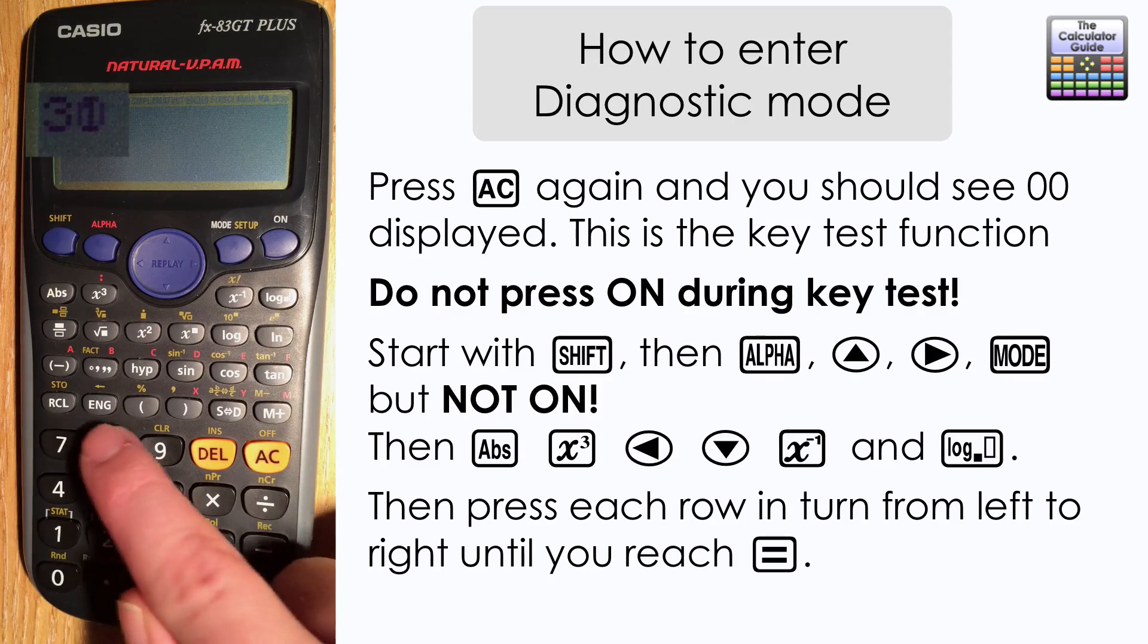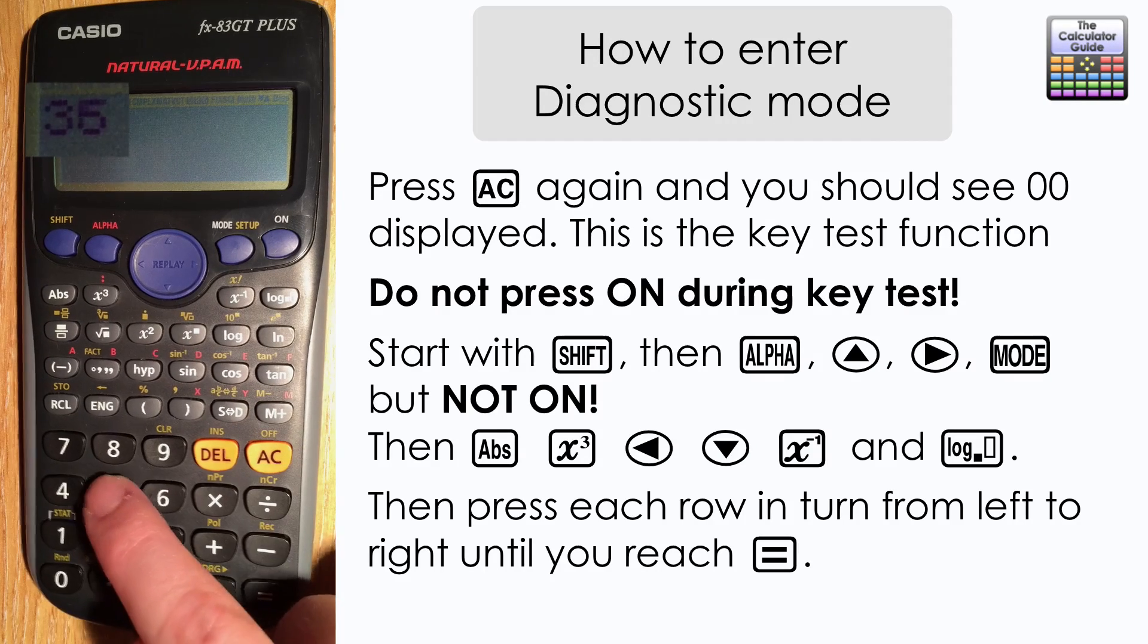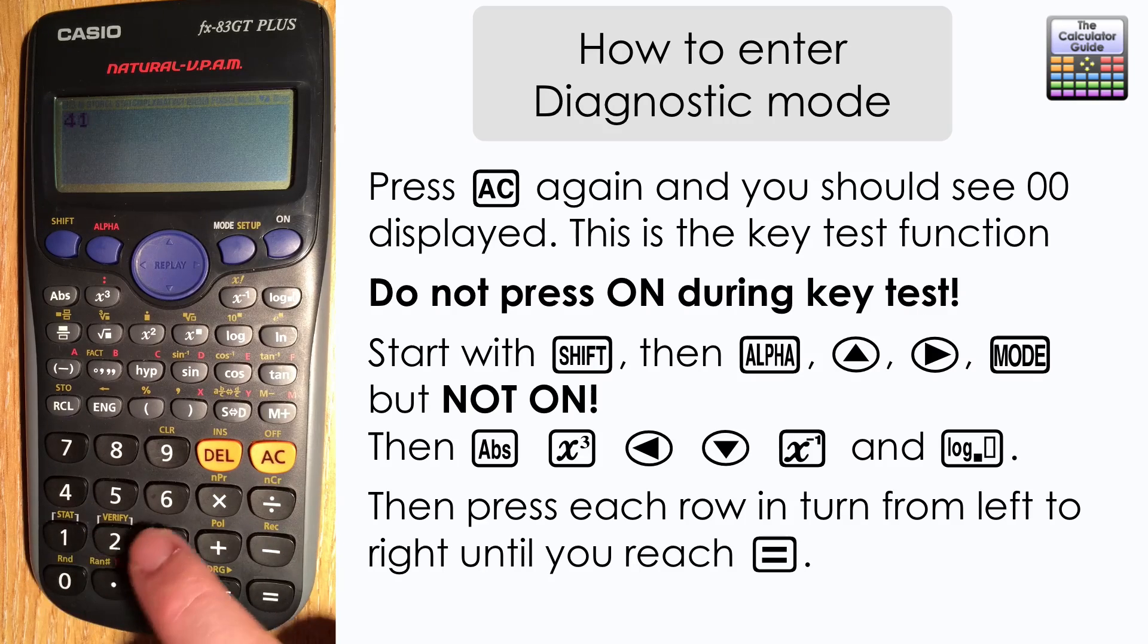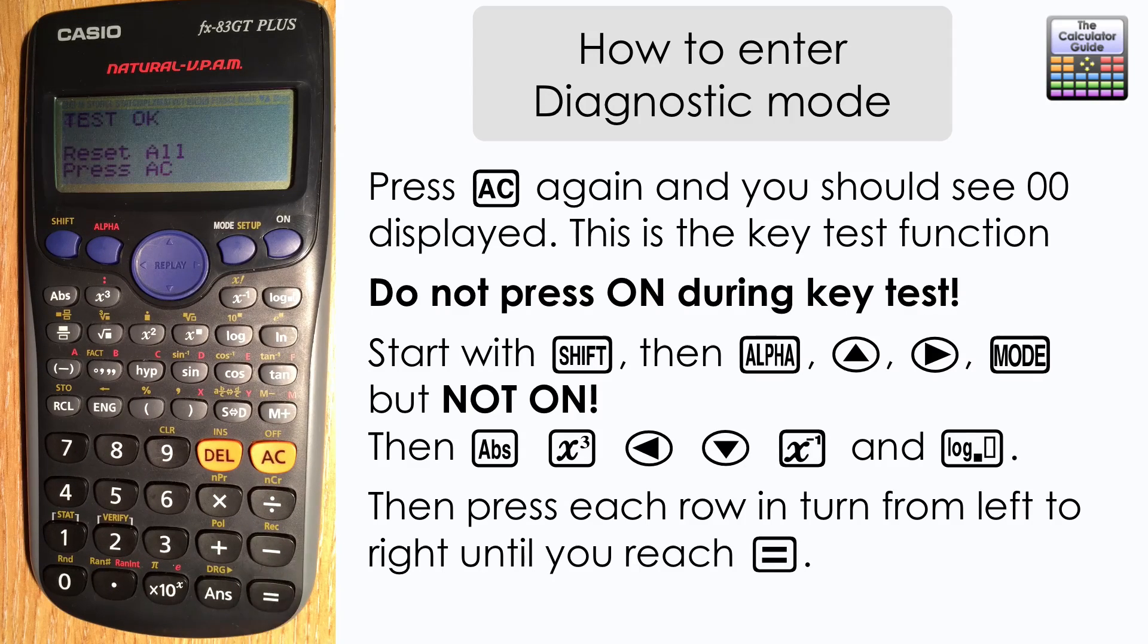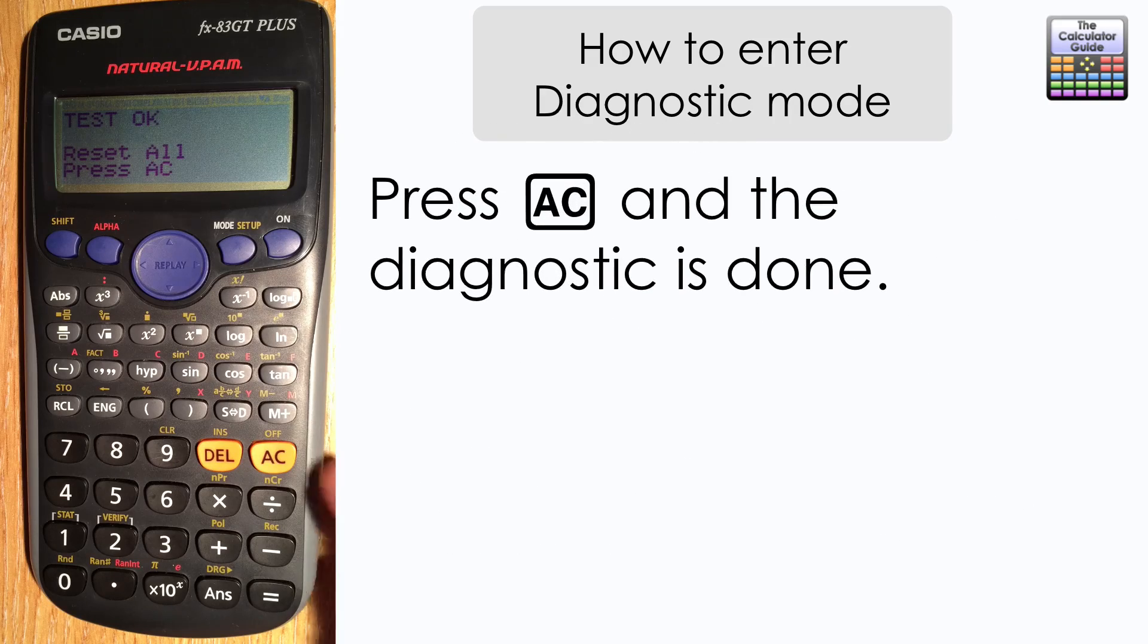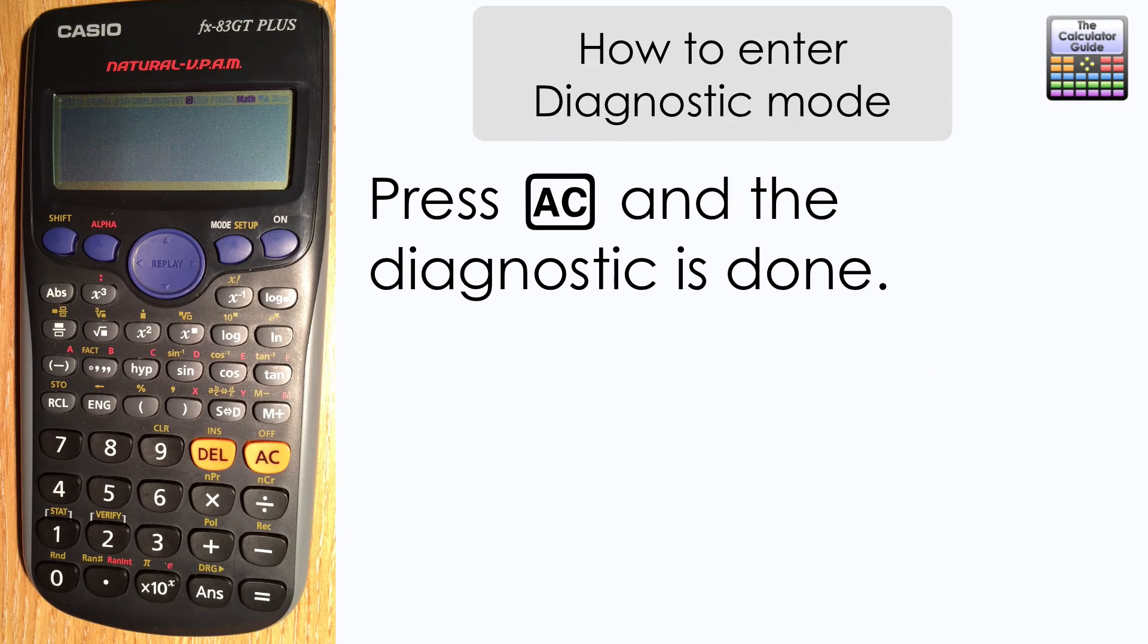What you should see is that the calculator is counting up the keystrokes. You have to press them in this particular order. If you miss one, the count won't continue, so you have to go back and press it. Continue all the way to equals, and it should say test OK, then press AC.